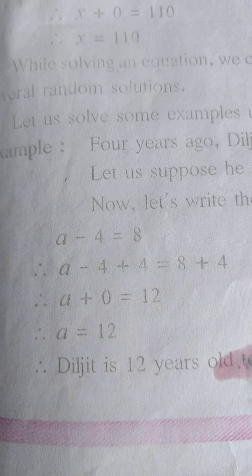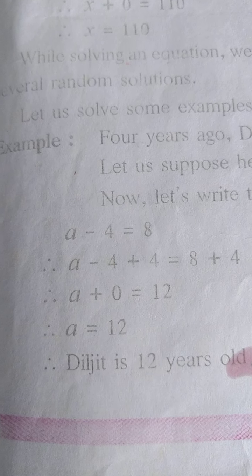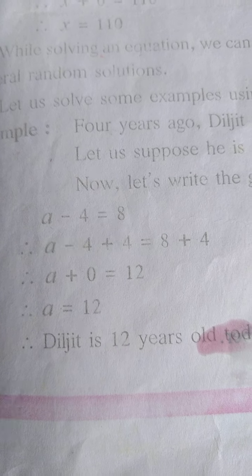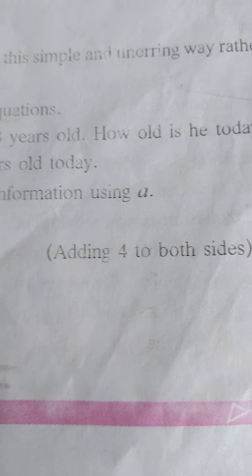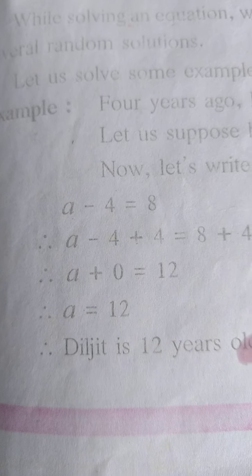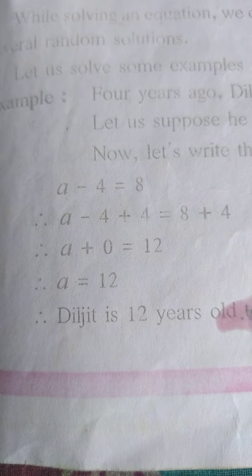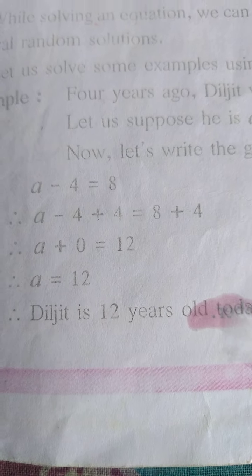Therefore, a minus 4 — same number but you change the sign. a minus 4, then you take plus 4 is equal to 8 plus 4, adding 4 to both sides. Therefore, a plus (minus 4 plus 4) is equal to 0. So, a plus 0 is equal to 12. And therefore, a is equal to 12.